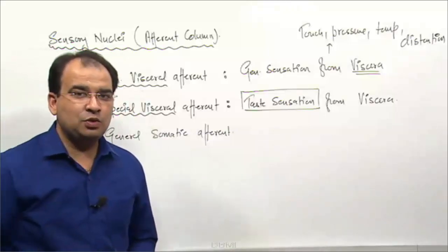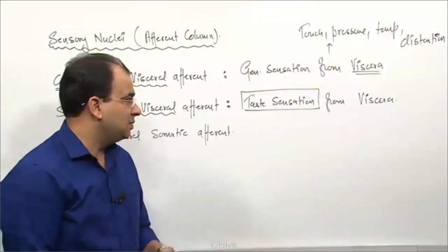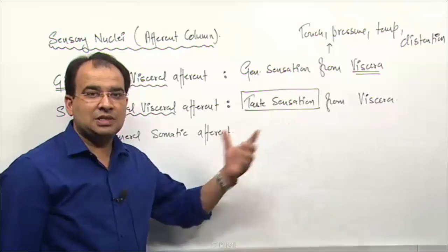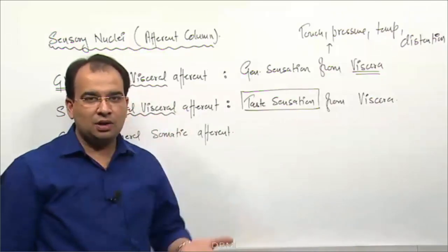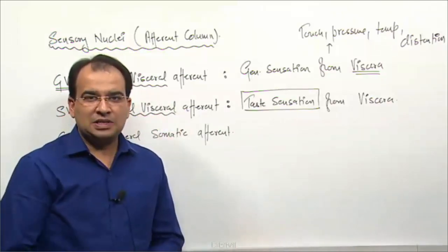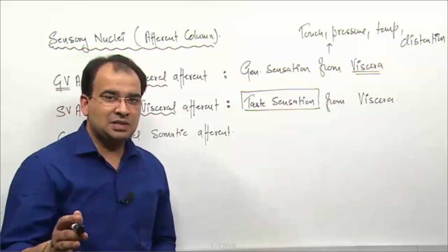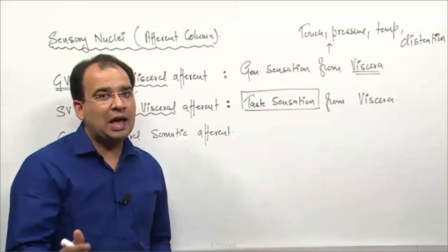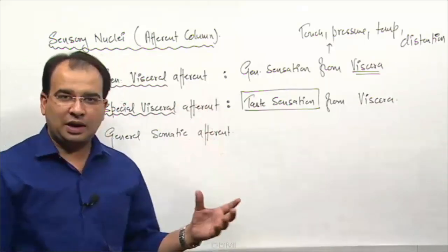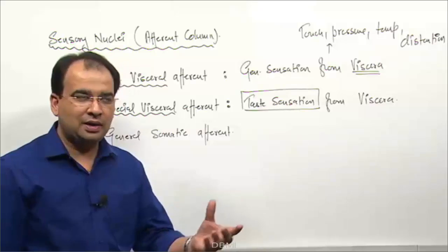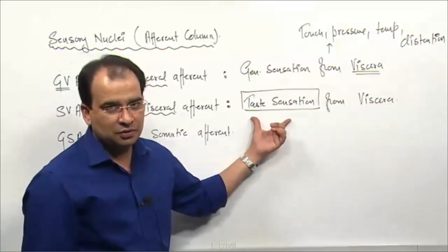That does not mean we do not have any other special sensations. We do have special sensations like olfaction and optic - they are all special sensations, but these special sensations do not have a cranial nerve nuclei. And right now we are talking about the cranial nerve nuclei, so we are only considering taste for now.